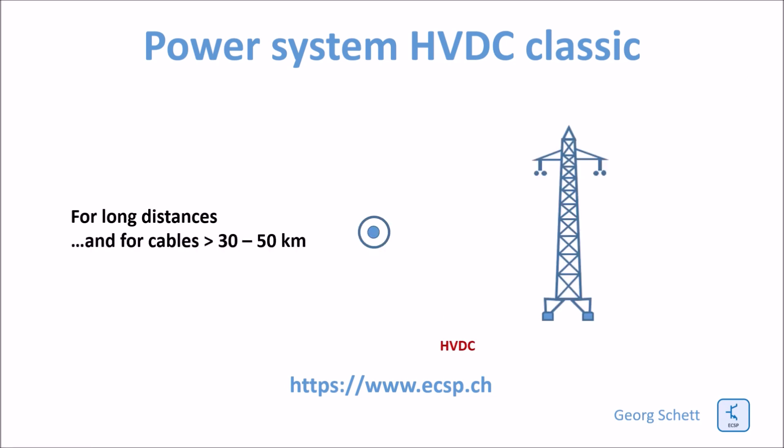For cable, however, the distance where you can transmit something meaningfully is between 30 and 50 km. This is due to the dielectric constant of the cable insulation, which dramatically increases the capacitance between the inner conductor and the outer shield, making the stray capacitance larger. The usage of HVDC cable systems is increasing because of all the subsea connections and interconnections being built today.